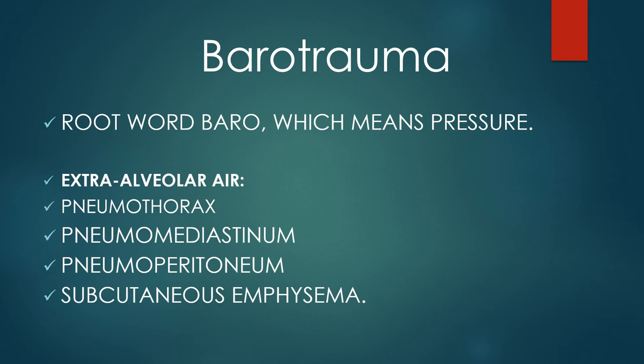Ever since we began ventilating patients with positive pressure ventilators, we've known about barotrauma — meaning ventilator pressure has caused alveolar rupture and an air leak, such as pneumothorax, pneumomediastinum, pneumoperitoneum, or subcutaneous emphysema. What pressure causes this? Is it the peak inspiratory pressure, the plateau pressure, the mean airway pressure, or the PEEP?